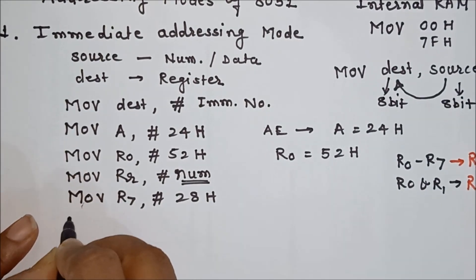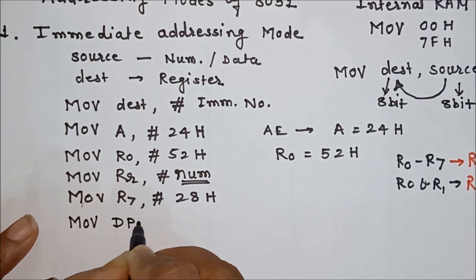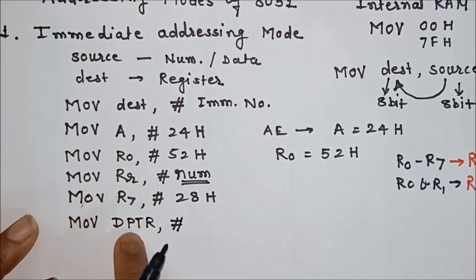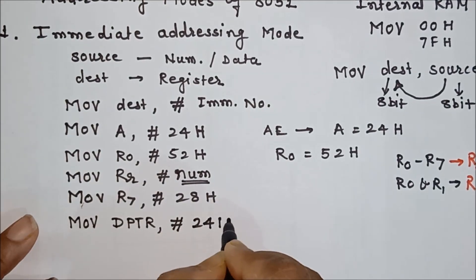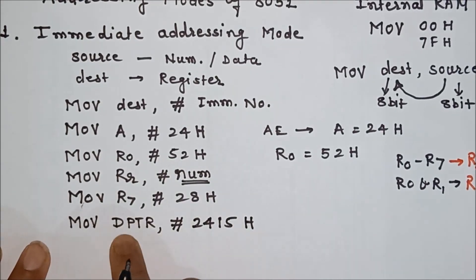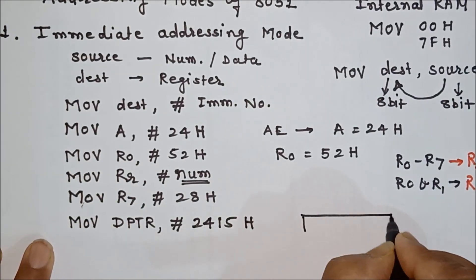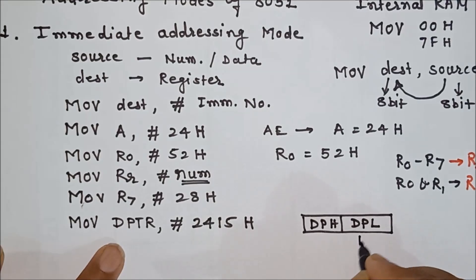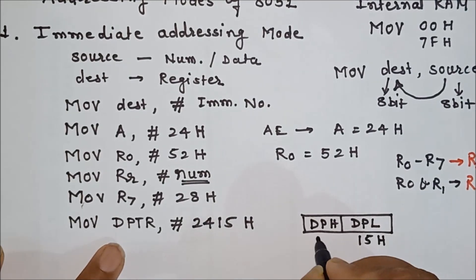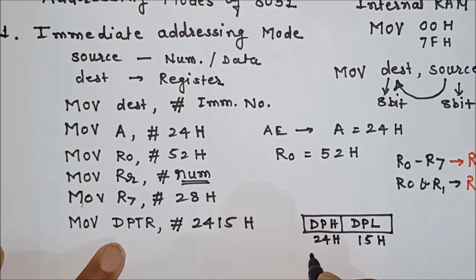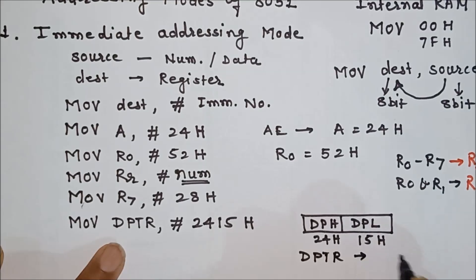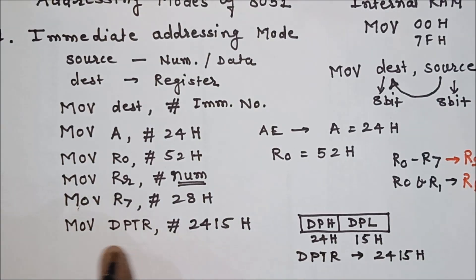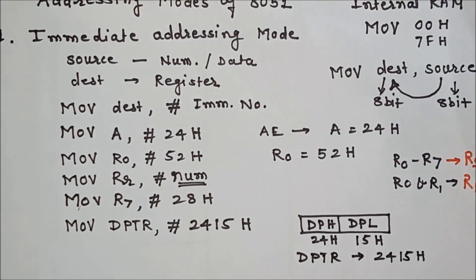We can also use immediate addressing mode to store data in the DPTR register. Since DPTR is a 16-bit register, we can store 16-bit data. DPTR is divided into two registers: DPL and DPH. For example, the lower 8 bits of the data will be stored in DPL, and the upper 8 bits will be stored in DPH. So the full 16-bit value like 2415H can be read from the DPTR register.